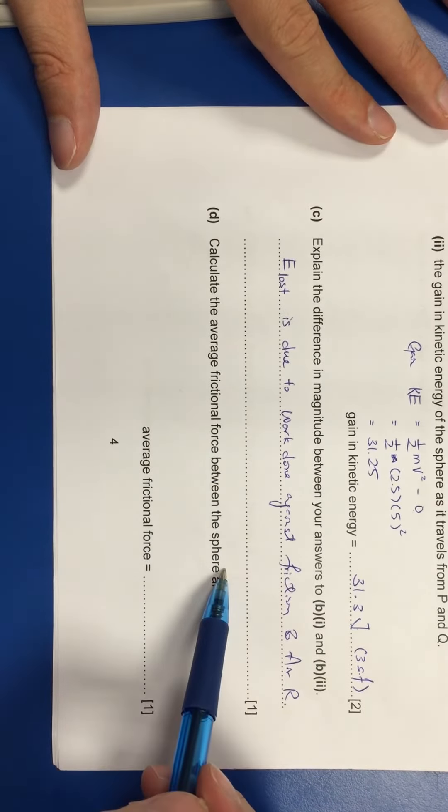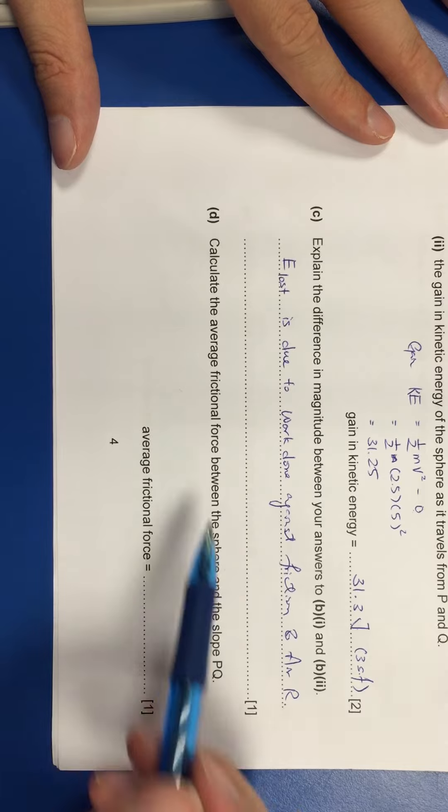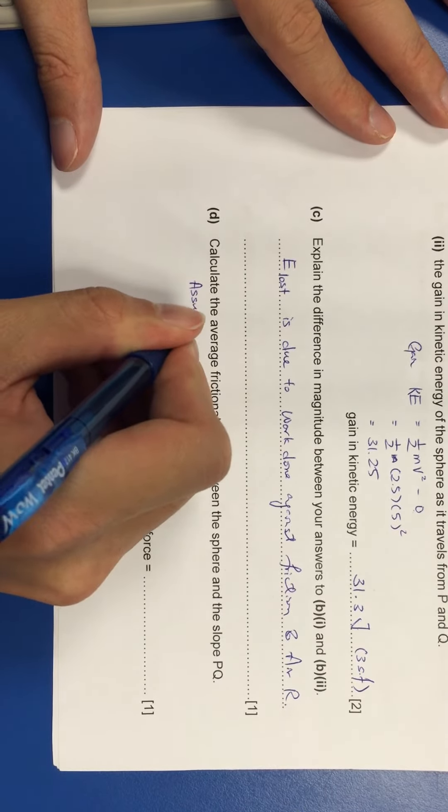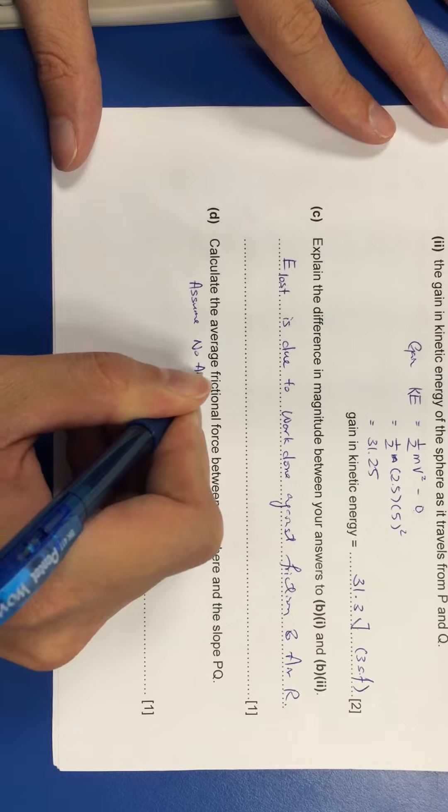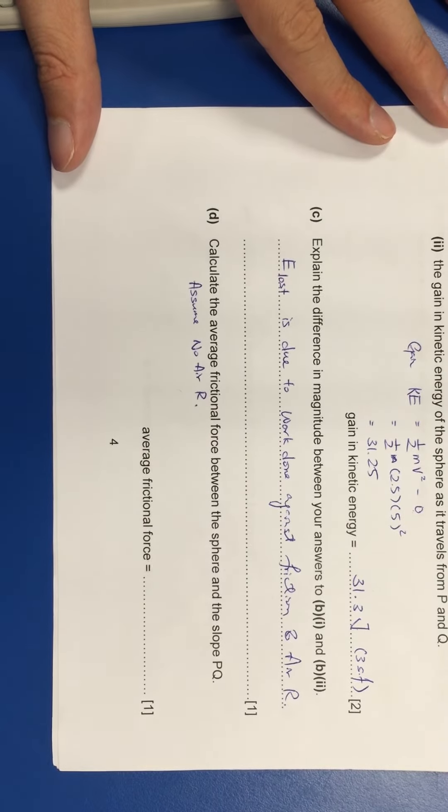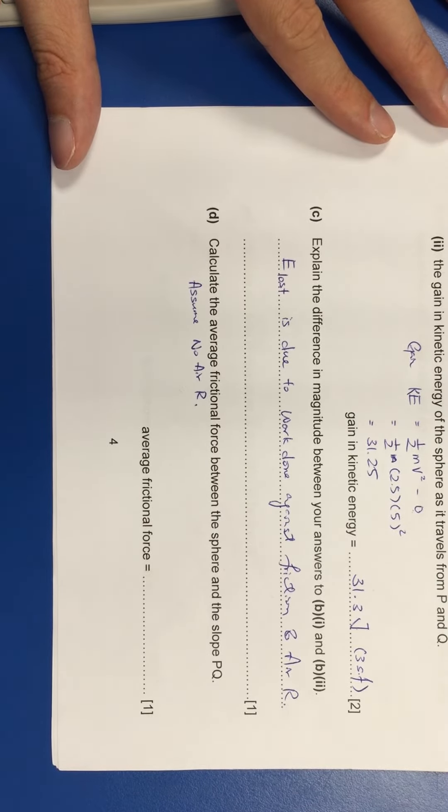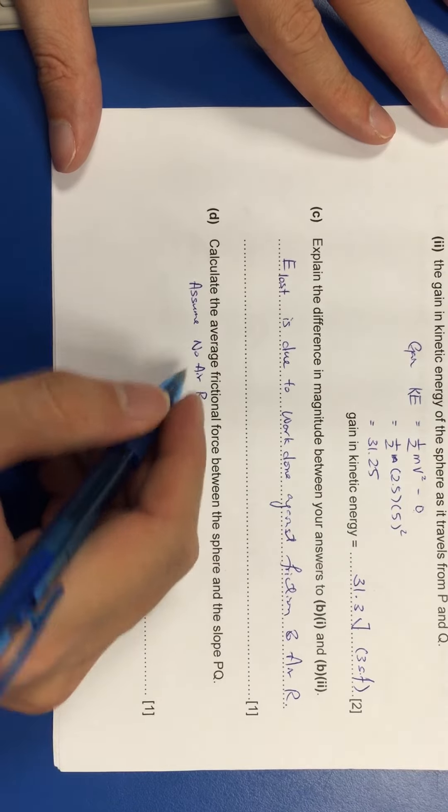So I'm supposed to calculate the average frictional loss. So in this case, I'm assuming no air resistance. Because if not, I would not know how much energy is spent on overcoming the work done against friction.